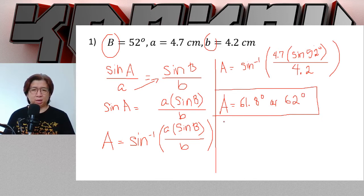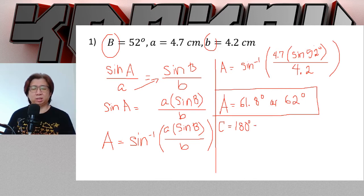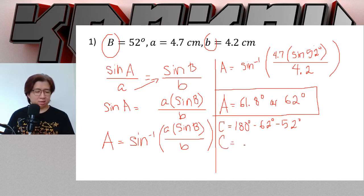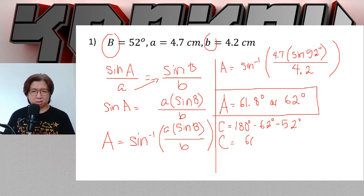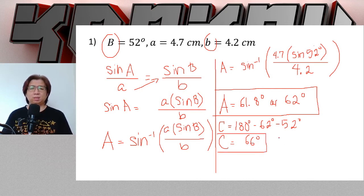Now we can find the measure of angle C by subtraction from 180 degrees: 180 minus 62 minus 52, so the measure of angle C is 66 degrees. Now let us find the measure of side c.